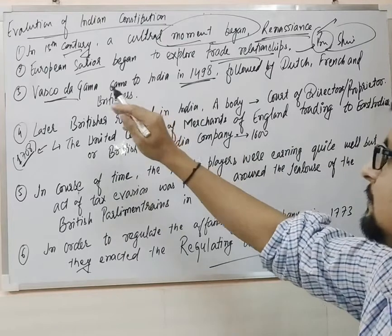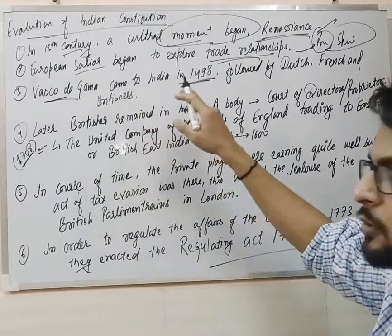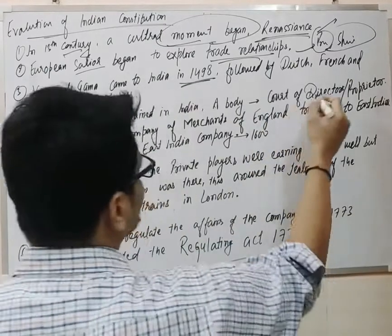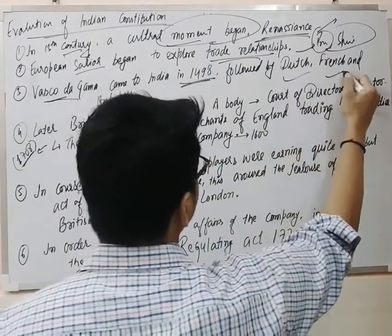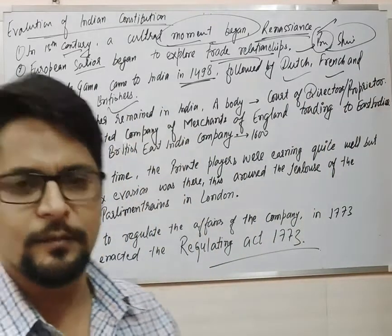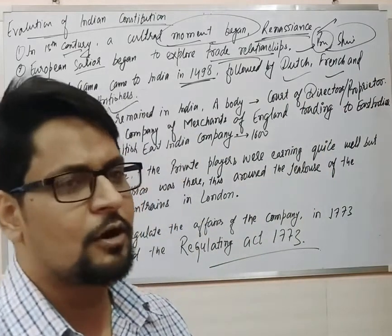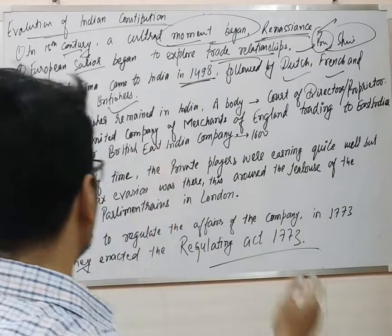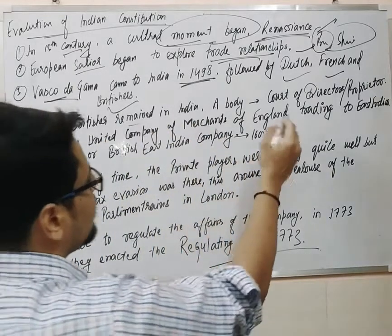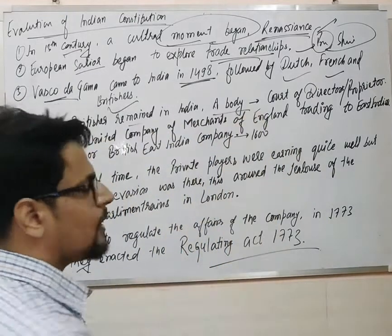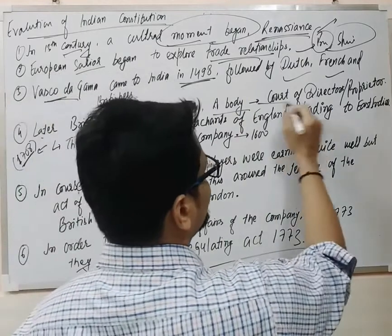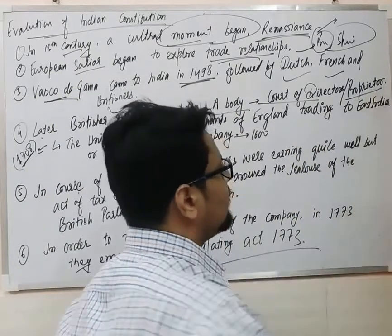After these Portuguese traders, other traders came to India — they were Dutch people, French people, and Britishers. But due to certain reasons, only Britishers remained in India for a very long period of time. They incorporated a body, they created a body that was named as the Court of Directors or Court of Proprietors.